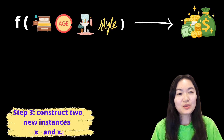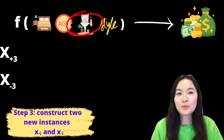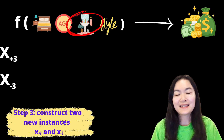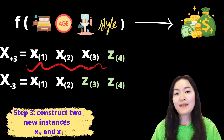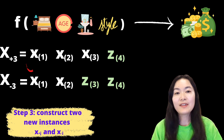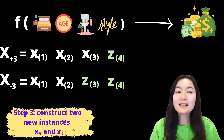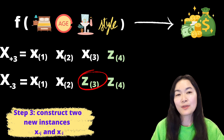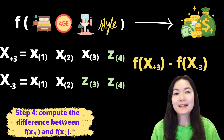Step 3 is to construct two new instances: x-plus-j and x-minus-j. For example, in this case, we're interested in the contribution of the number of bathrooms. So we create new instances x-plus-3 and x-minus-3. x-plus-3 means that the first three values stay the same, and everything afterwards we replace with the values we get from the sample z. x-minus-3 only has one value difference — we also replace x3 with z3.